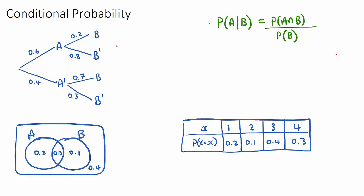If we want to find the probability of A given B using our formula, we know this is the probability of the intersection of the two over the probability of the given-that event. In a tree diagram, we can find the intersection by multiplying our branches, so it will be A and B: 0.6 times 0.2. Then we need to divide by the probability of event B happening.